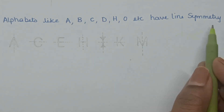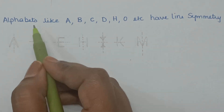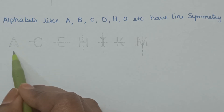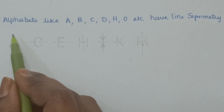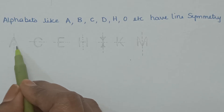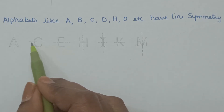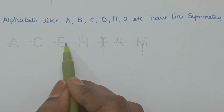Line symmetry in some alphabets. Letter A has one vertical line of symmetry. When we fold it along the line of symmetry, the two halves align perfectly. Letters C and E have one horizontal line of symmetry.